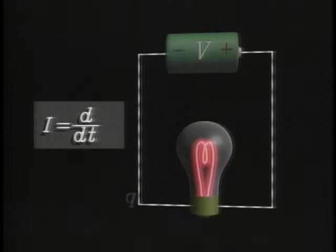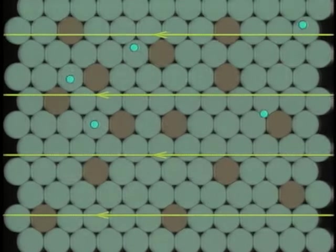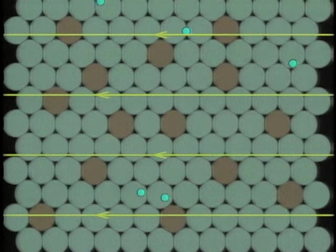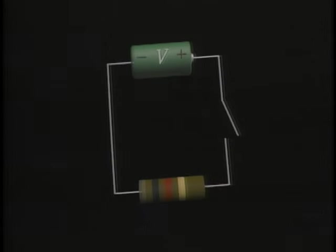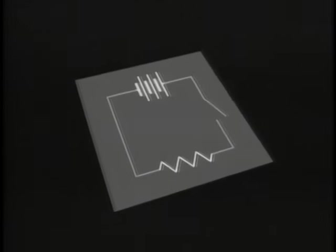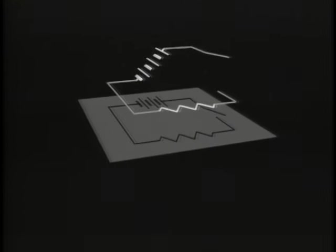An electric current is a moving electric charge. The electron's motion is slowed by collisions with imperfections in the metal. This is called resistance, and it turns some of this electrical energy into heat.